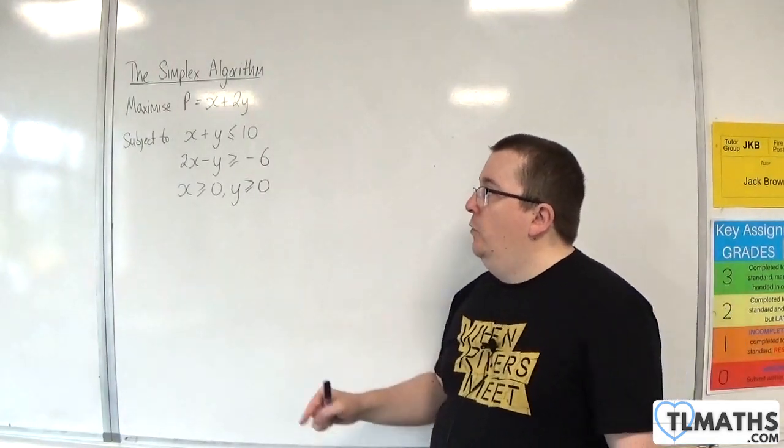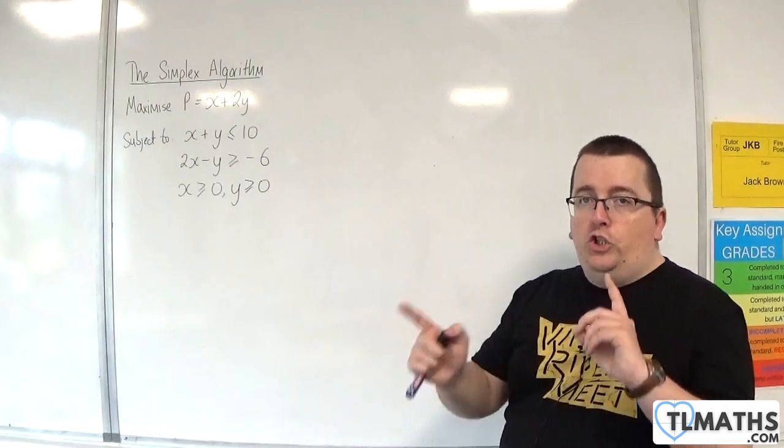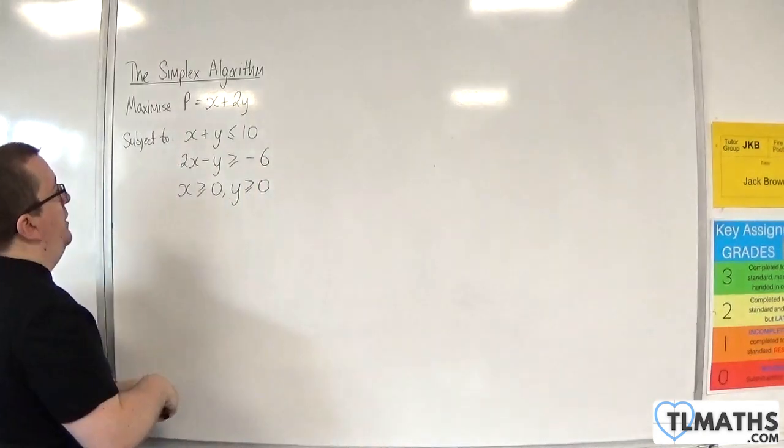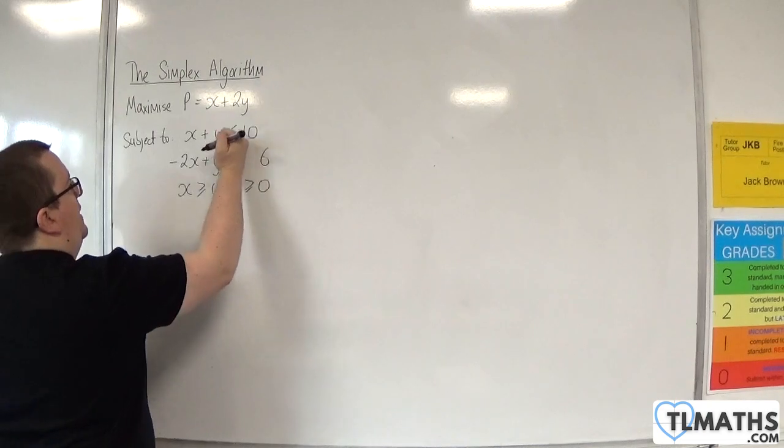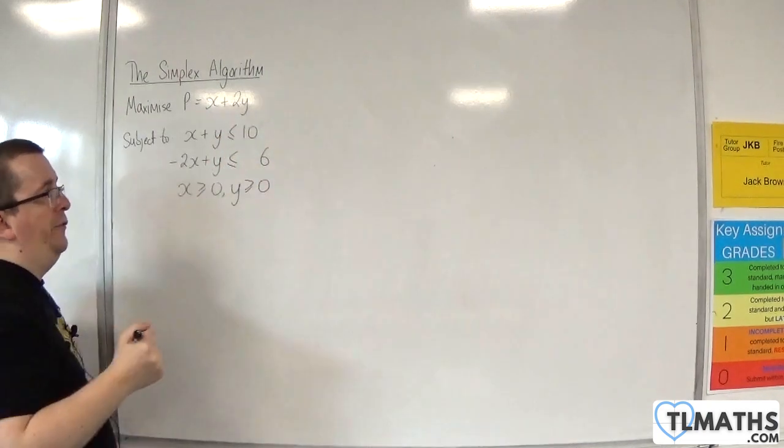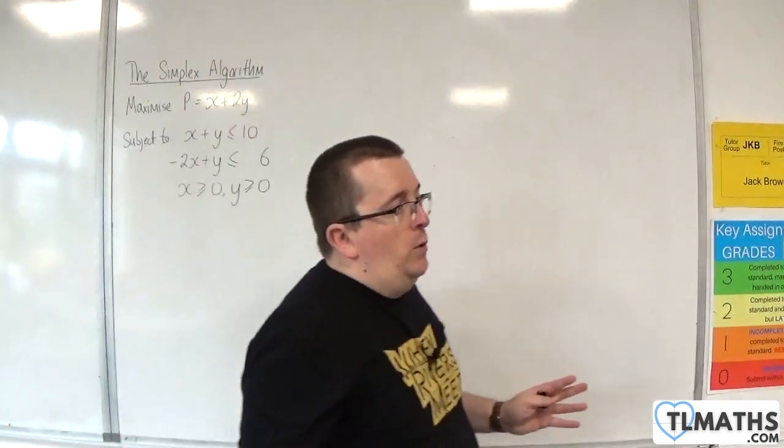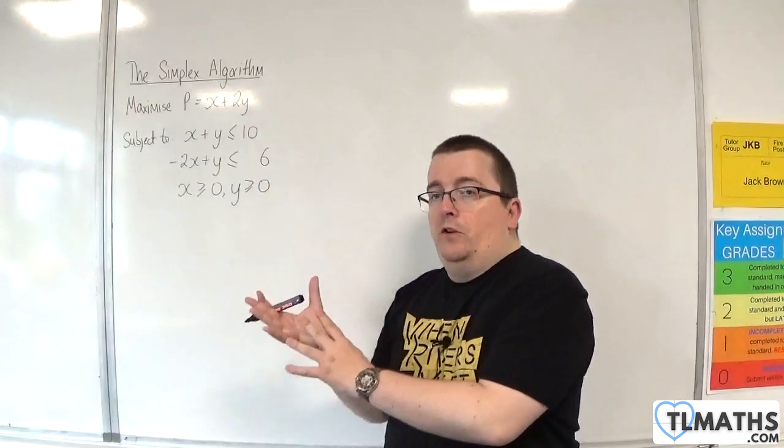So actually, although this looks like a two-stage problem, I can change it a little bit by multiplying through by minus 1. So minus 2x plus y is now less than or equal to 6. So I've just multiplied that inequality through by minus 1, and that flips the direction of the inequality symbol, of course.